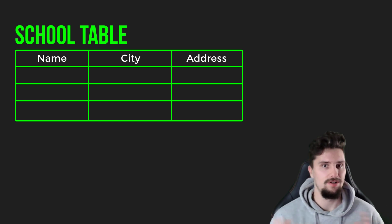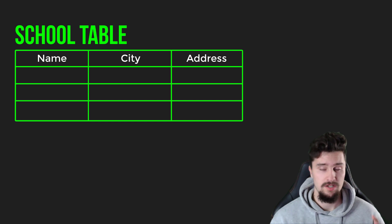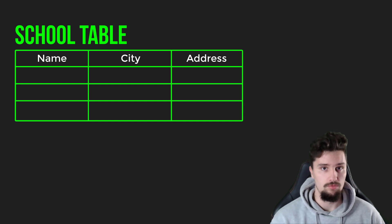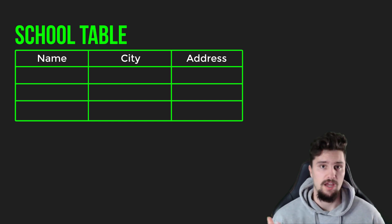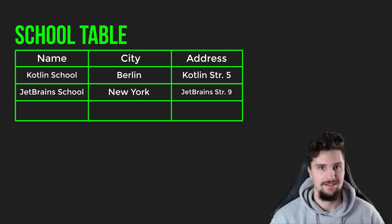Those are all single properties that make up the columns of our table. When we want to save specific schools in that table — single entries — these entries make up rows in the table. So we could have a school in Berlin called Kotlin School, or a JetBrains school in New York. Each single school is one row in our table.